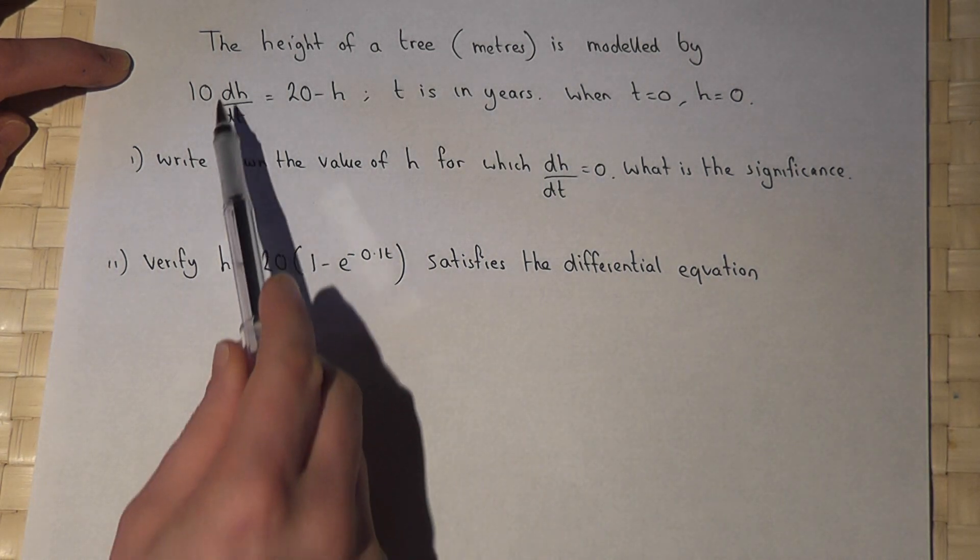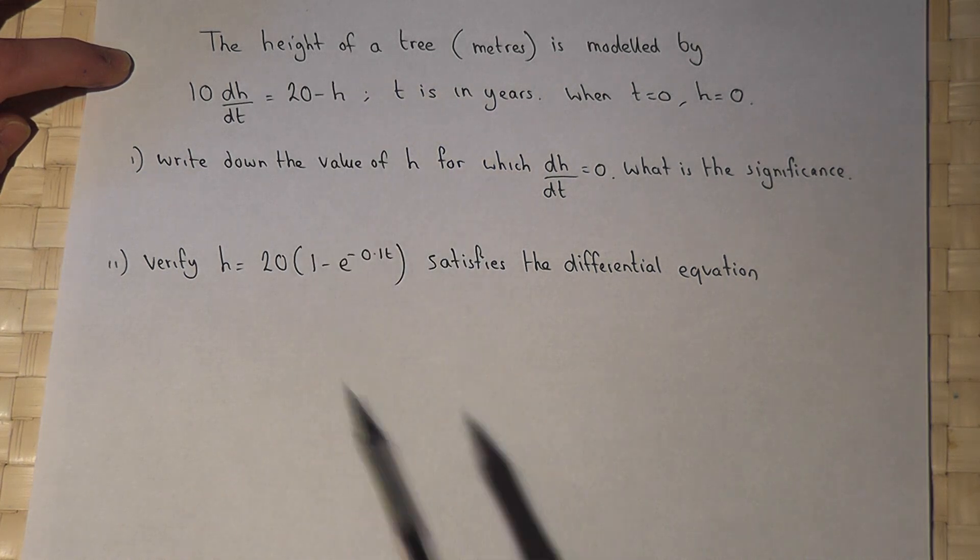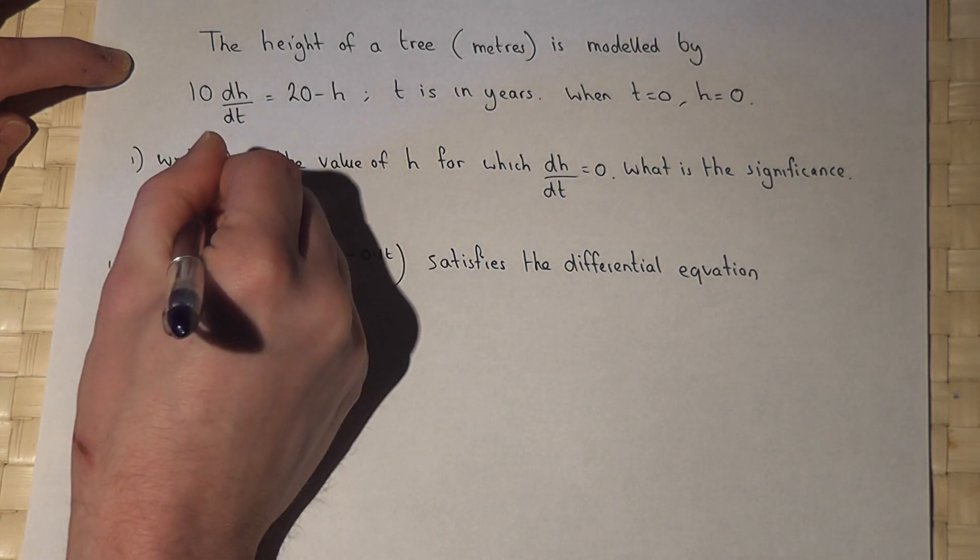For dh by dt to equal zero we would need 20 minus h to equal zero. So in other words we need h to equal 20.